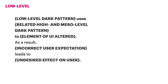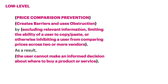At the low level, we included components that relate to one or more specific elements of the user interface, interpreting the incorrect user expectation in relation to the undesired effect on the user. Low-level definitions describe the specific user interactions that are limited, a coordinated set of user interactions that produce the desired effect, discrete UI elements, or a user's comprehension of the interface. The example of price comparison prevention includes the higher level strategies of creating barriers and obstruction, excluding relevant information, limiting the ability of a user to copy-paste, or otherwise inhibiting a user from comparing price across two or more vendors, so that the user cannot make an informed decision about where to buy a product or service.